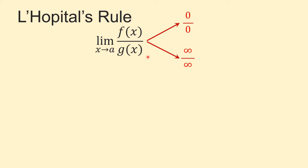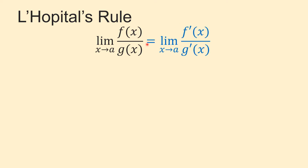L'Hôpital's rule says this limit equals the limit of f′(x) over g′(x) as x approaches a, if the right-side limit exists or is positive or negative infinity. So to find this limit, all we need to do is differentiate the numerator and denominator separately and then take the limit. Let me show you by some examples how to apply this powerful rule.